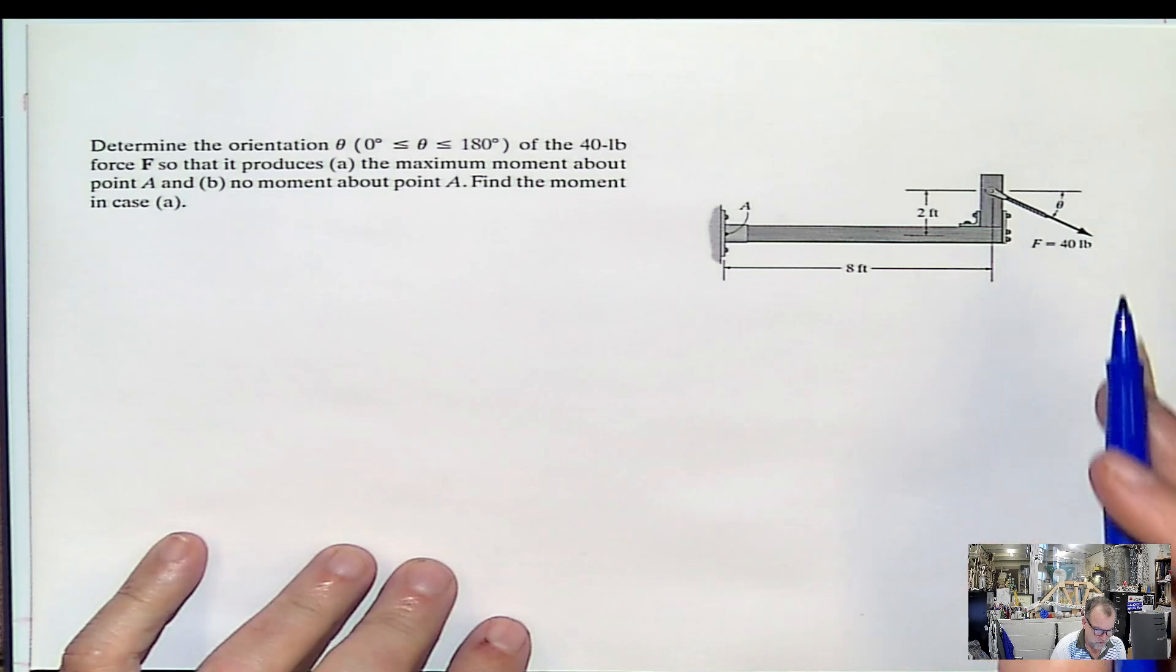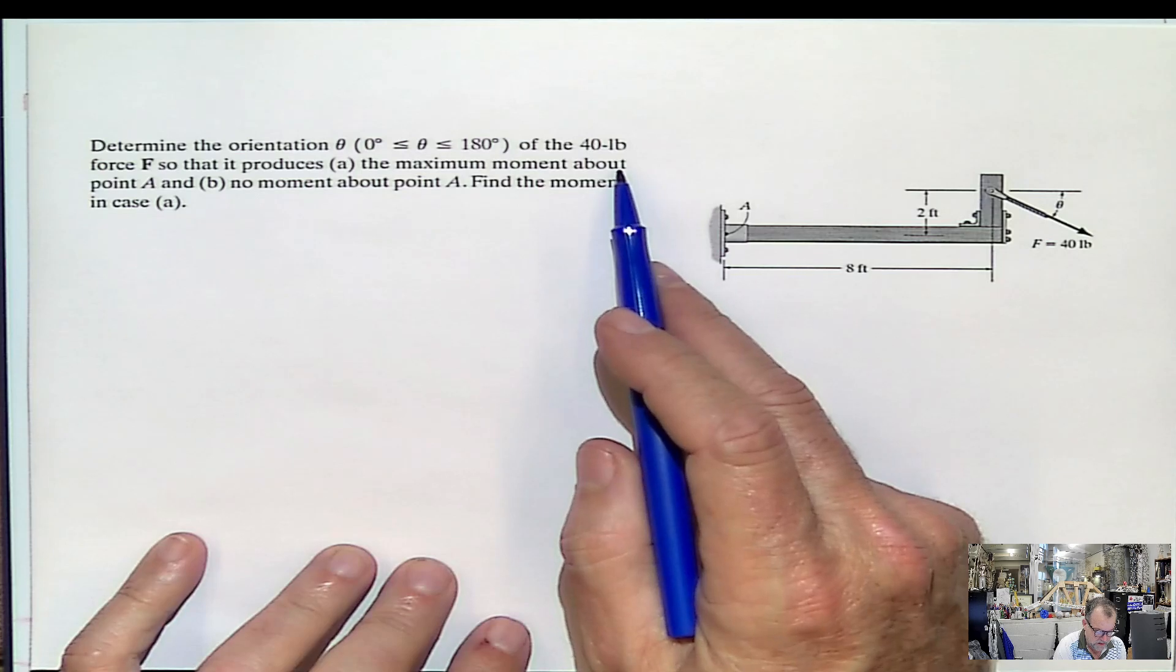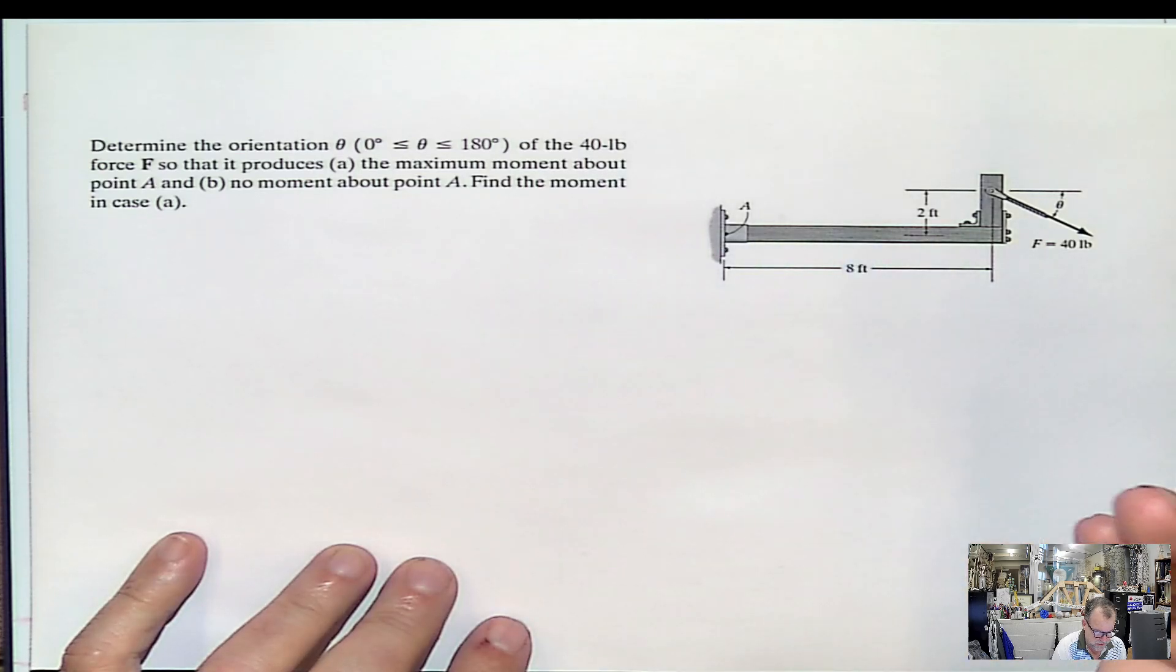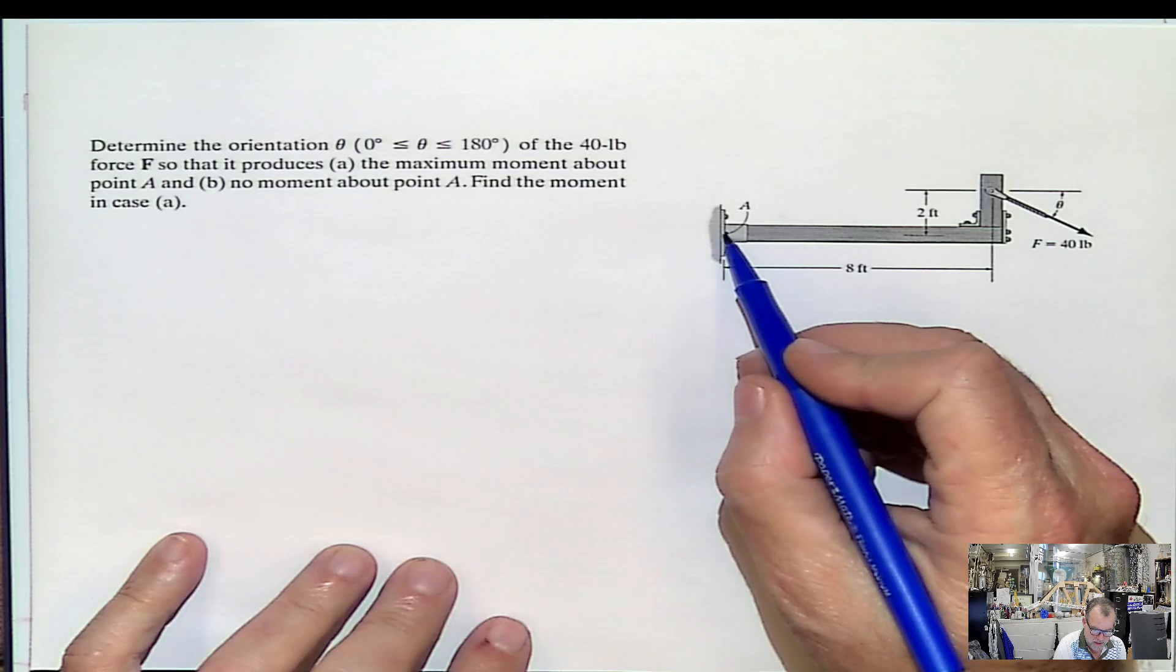It produces several parts. Maximum moment at A, and no moment at A. So the maximum moment at A.